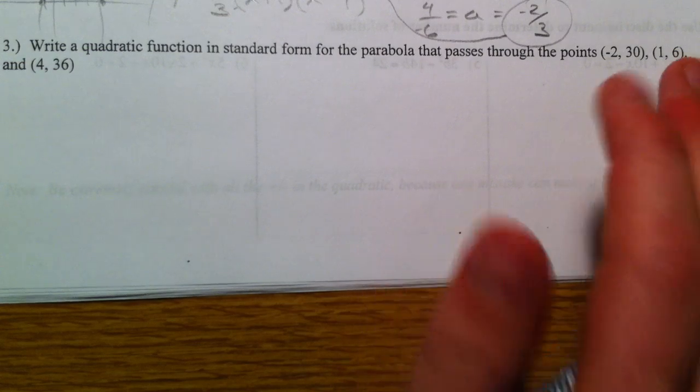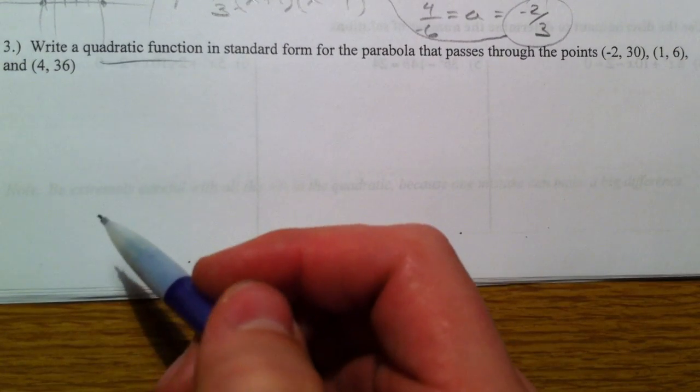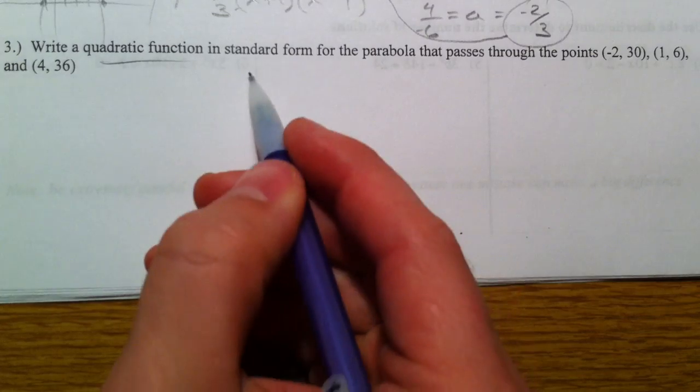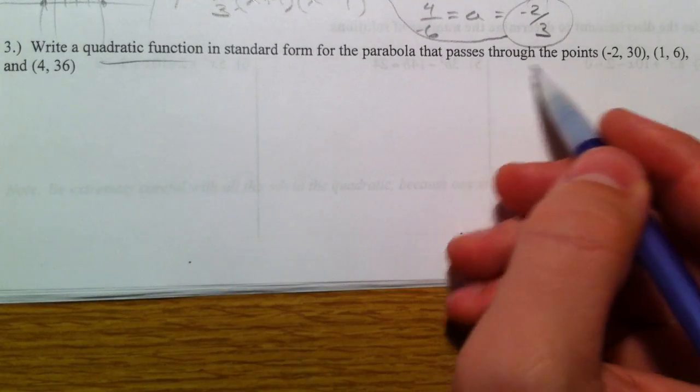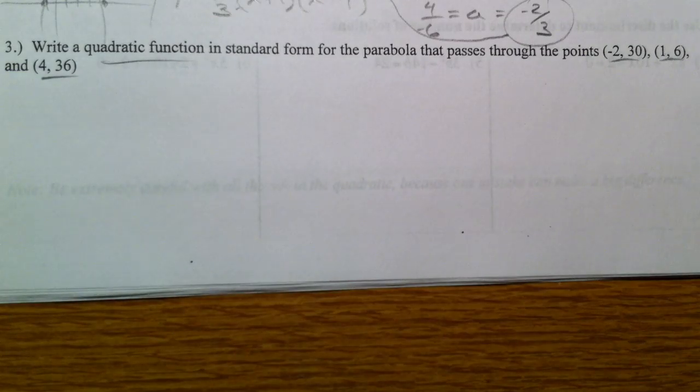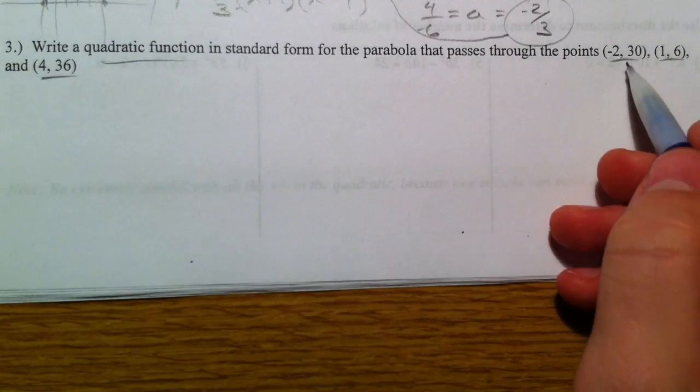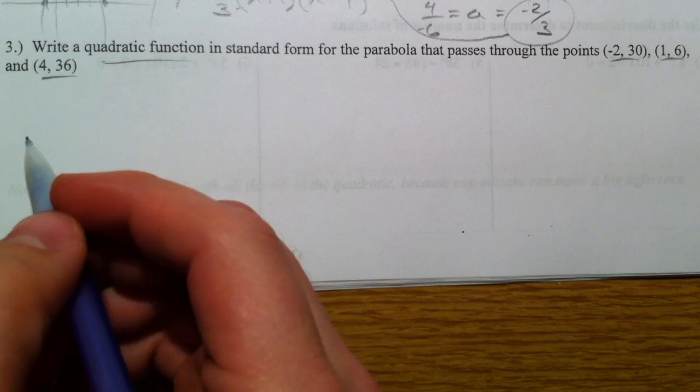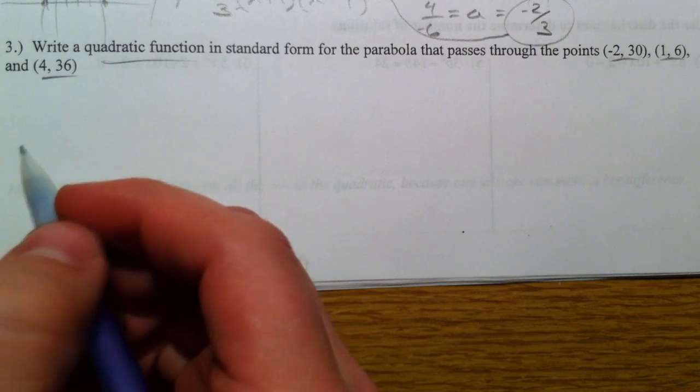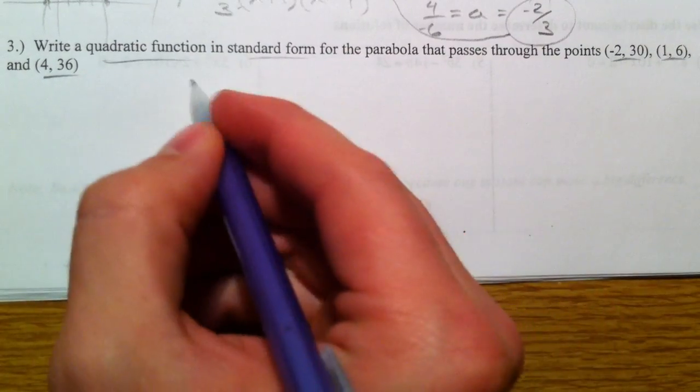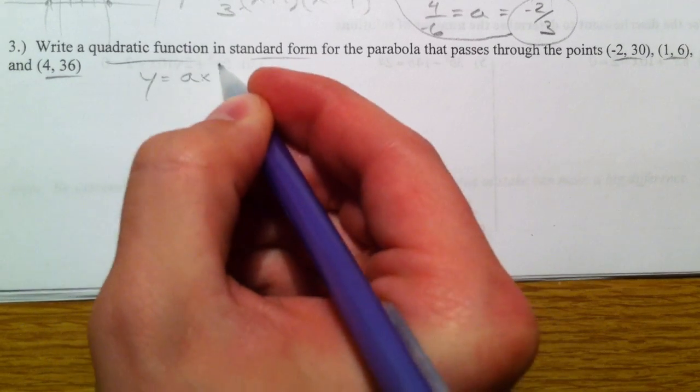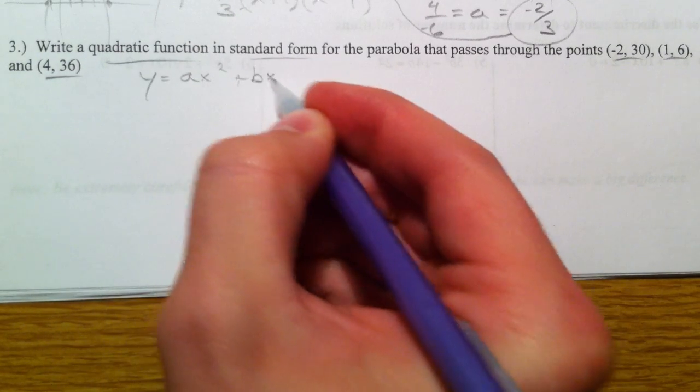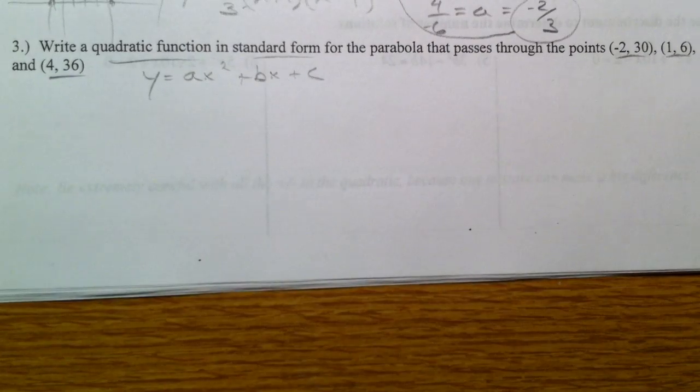This next one, write a quadratic function in standard form for the parabola that passes through these three points. Okay, so here's the trick. None of these, or maybe one of them we don't know, are the vertex. But remember, standard form is ax squared plus bx plus c. Well, what are a, b, and c? Well, we don't know.